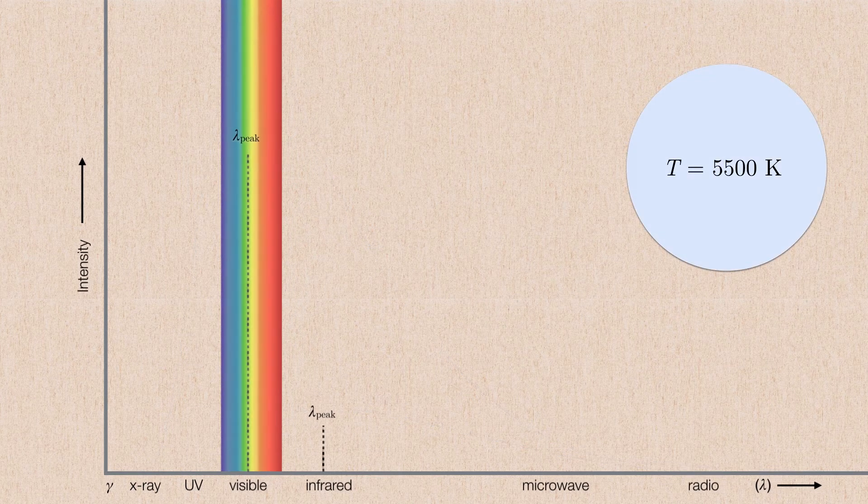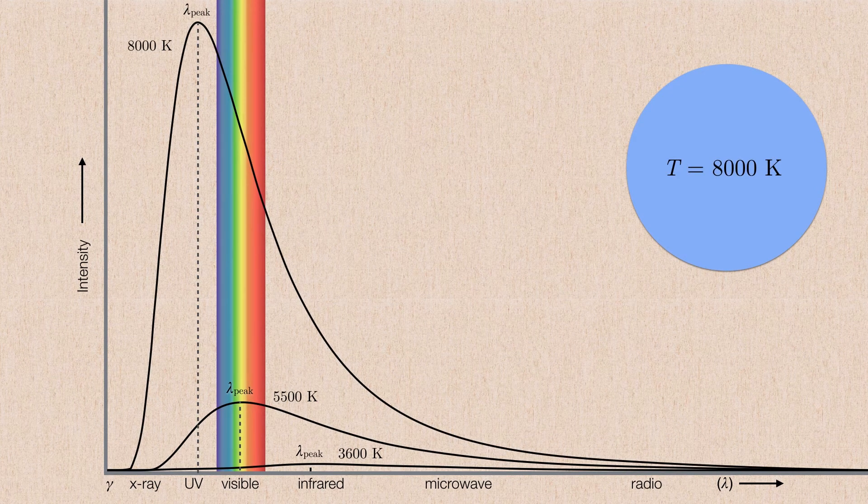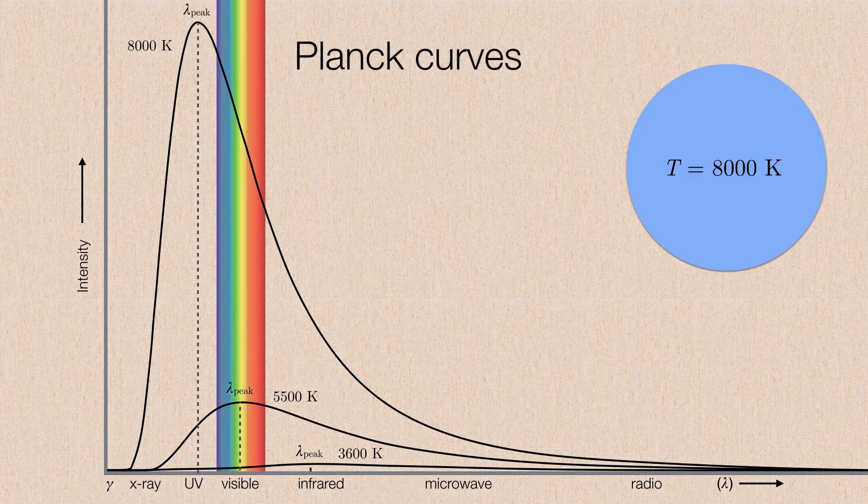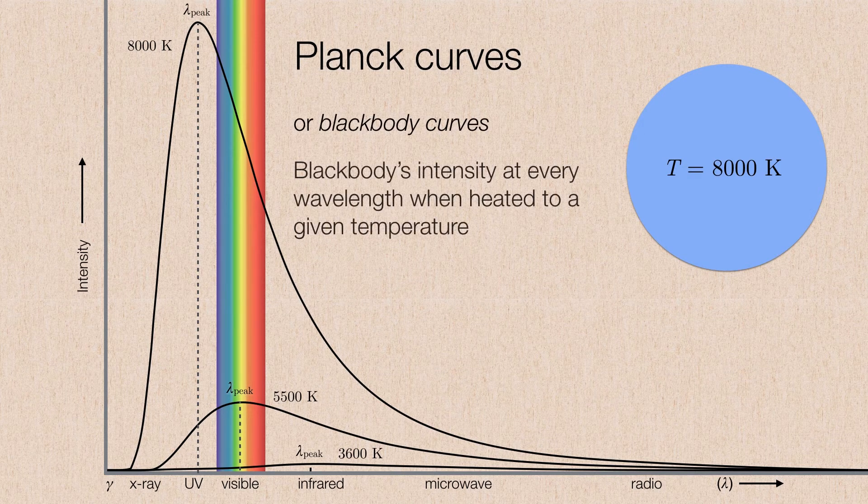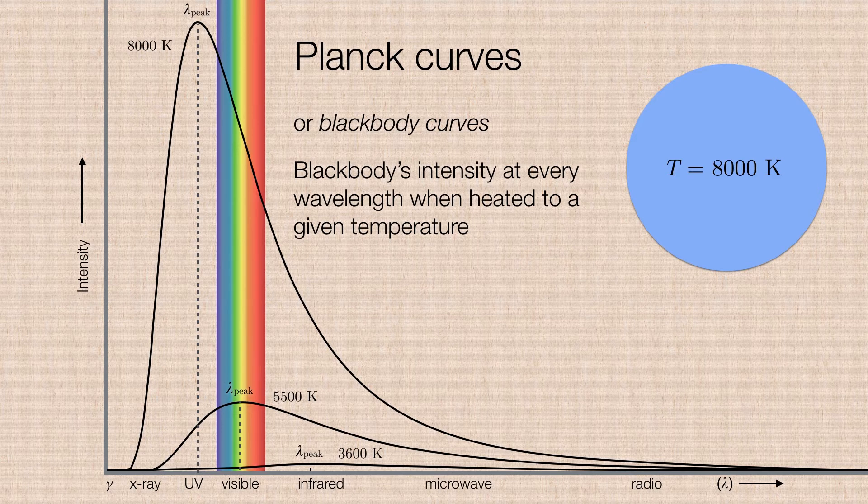But if we zoom out again and increase the temperature of our black body to 8,000 Kelvin, once again we outradiate the previous two black bodies at every possible wavelength. But now the peak wavelength is somewhere in the ultraviolet. So these theoretical curves are called Planck curves, or sometimes black body curves. It's just a relationship between the black body's intensity at every wavelength when heated to a given temperature.